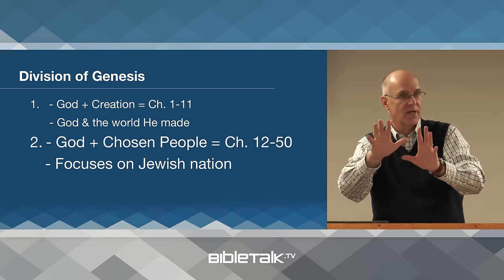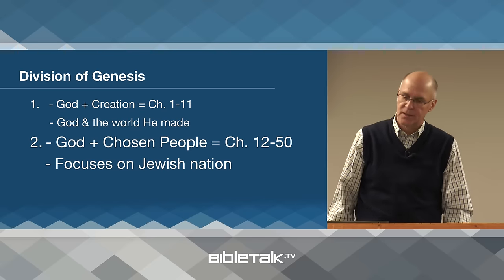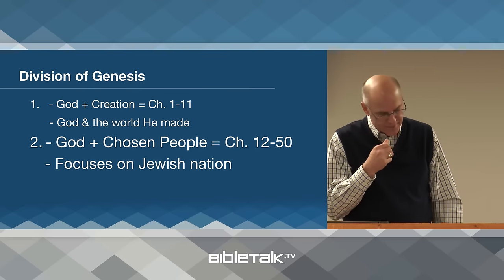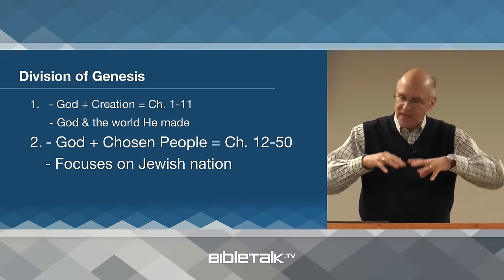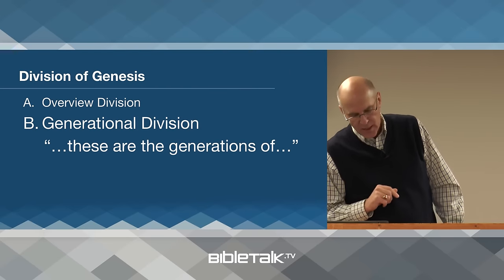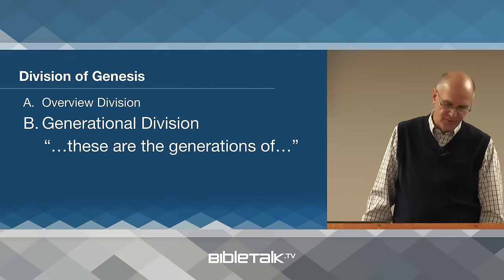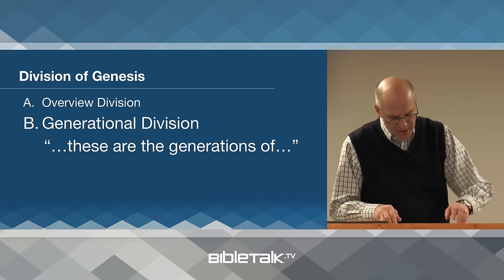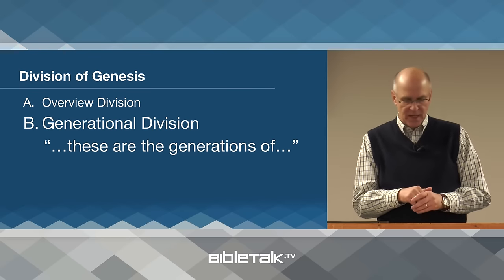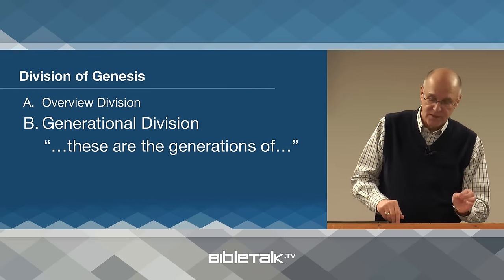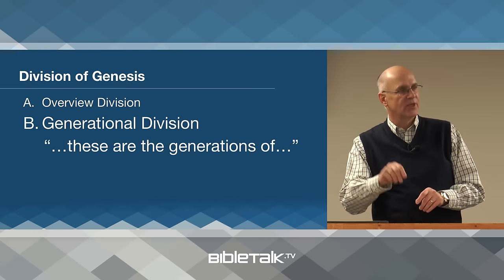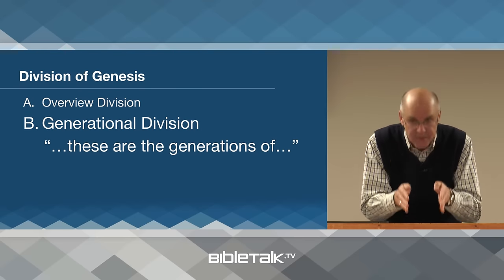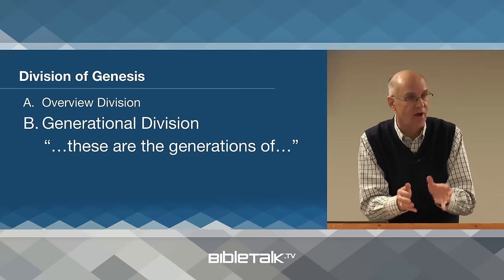It's as if the first eleven chapters are like a wide shot — a panoramic view. And then chapters twelve to fifty, there's a zoom in on just one individual. Lots of other stuff is going on in the world, other nations and cultures being developed, but the Bible puts those out of focus and zooms in on Abraham and how through Abraham God created a special nation for His purposes. The second way to divide it is the generational division. Moses may have used the records from the patriarchs to compile the book, and there is some evidence of this from the way Genesis is put together.